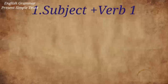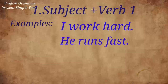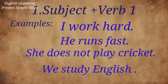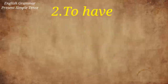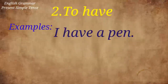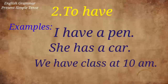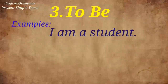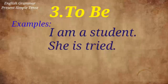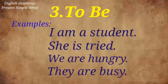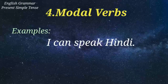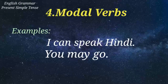The first form is subject plus verb one. For example: I work hard, he runs fast, she does not play cricket, we study English. The second is 'to have' — I have a pen, she has a car, we have class at 10 am. The third is 'to be' — I am a student, she is tired, we are hungry, they are busy. The fourth is modal words — I can speak Hindi, you may go, she can help you.